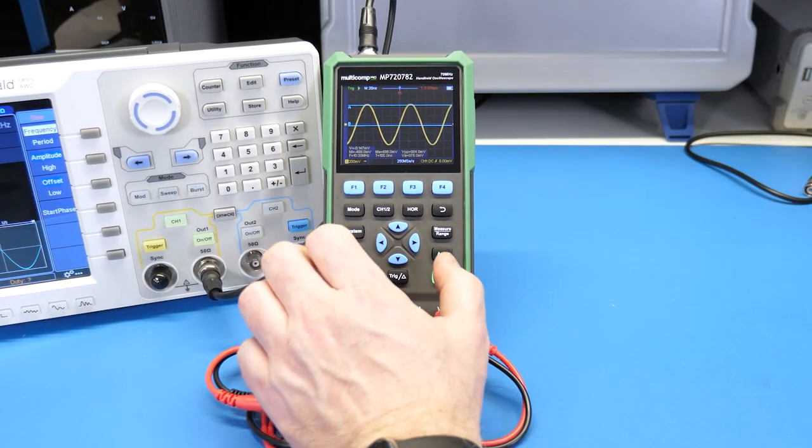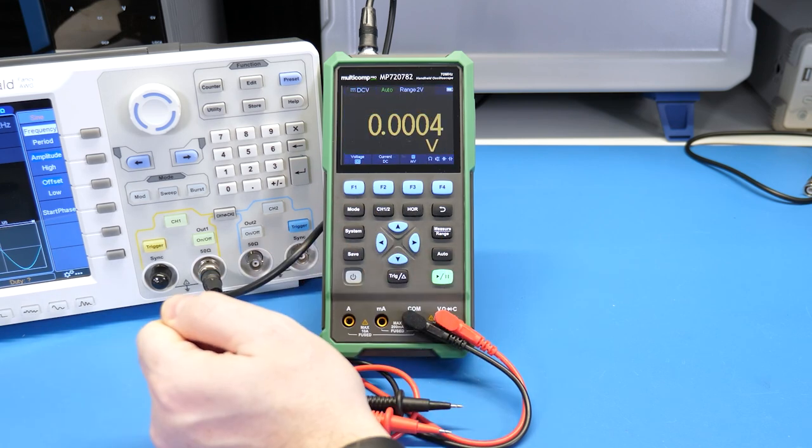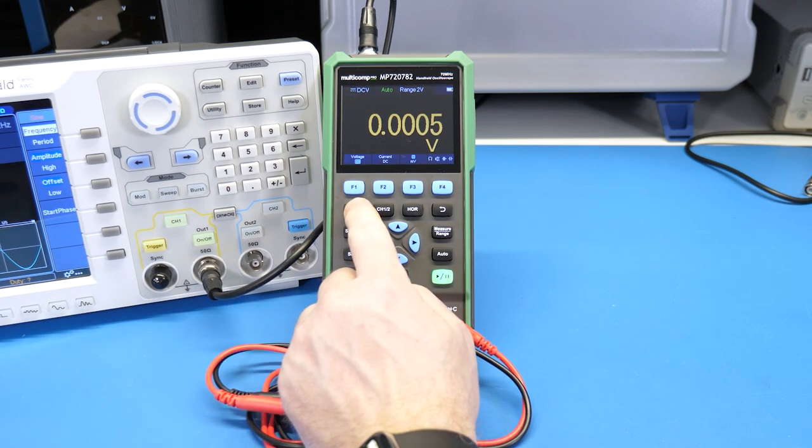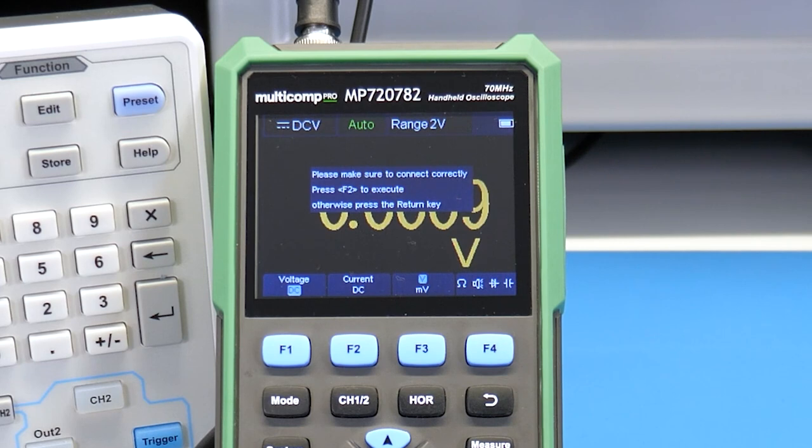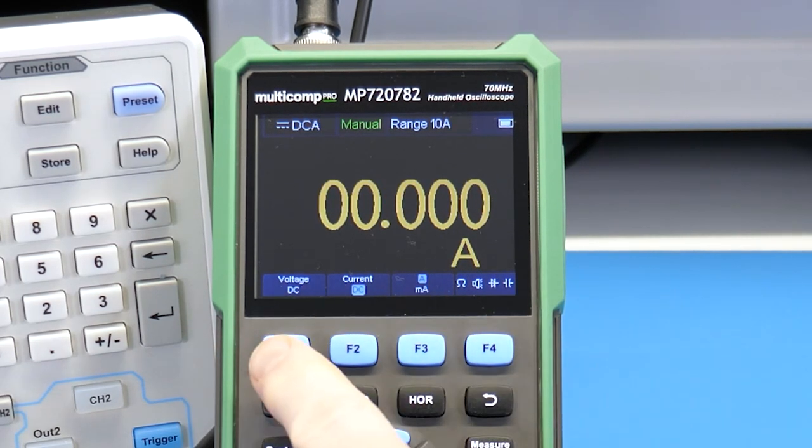Switching between scope and DMM is as simple as pressing the mode button, and it switches very quickly between them. Voltage measurements work like you would expect them to. What I found interesting is that when you switch to current, you get a confirmation dialog. But when you switch back to voltage, there's no warning. Which seems more important to me, because when you switch from current to voltage without moving the probe, that's how you blow the fuse.